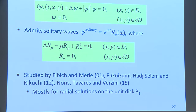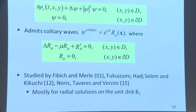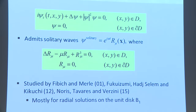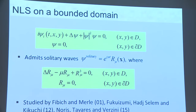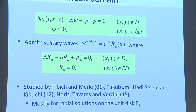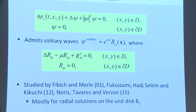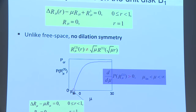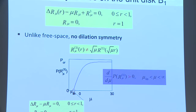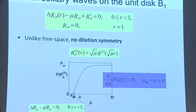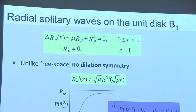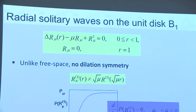This brings us to the NLS on a bounded domain. We impose Dirichlet boundary conditions for reflecting boundaries. Solitary waves satisfy the R equation on a bounded domain. This equation was studied by Frank and myself in 2001 and in later work, mostly on radial solutions on the unit disk. The important thing to note is that we no longer have dilation symmetry because of the Dirichlet boundary condition, and this changes everything.